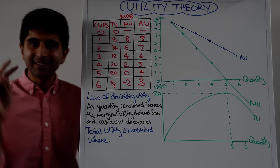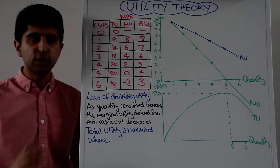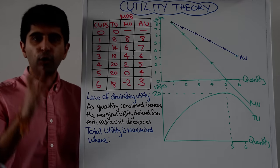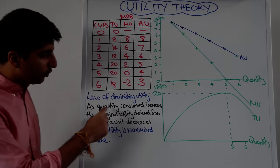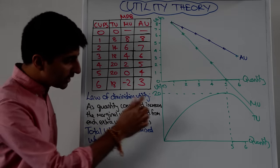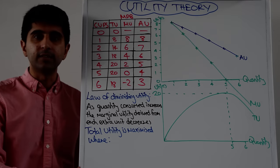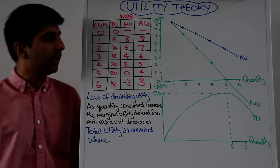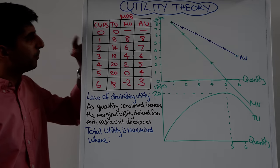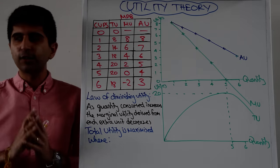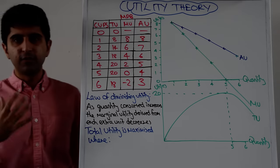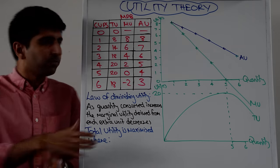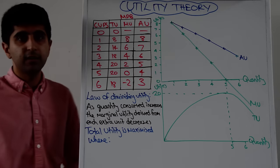They are downward sloping because of the law of diminishing utility. As more quantity is consumed, the marginal utility derived from each extra unit decreases — that is the law of diminishing utility. It makes sense: when that person drinks the first cup of Coke, they are so thirsty and parched it generates huge utility — eight units of utility for that first cup. But then the next one still generates more utility, but not as much as the first. The one after that generates four utils, but not as much as the second.